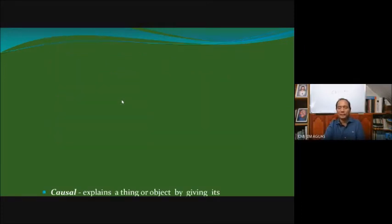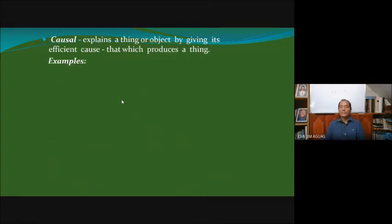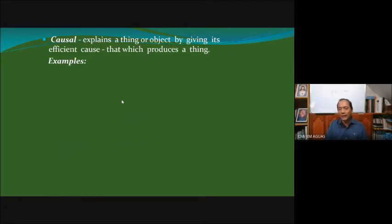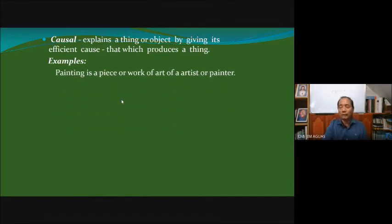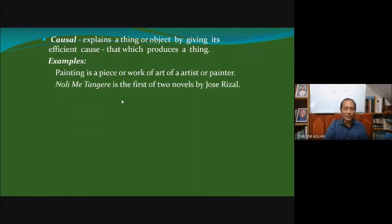The causal definition: again you give the genus, but add the efficient cause — that which produces a thing, the creator, producer, or manufacturer. For example: 'A painting is a piece or work of art of a painter or artist.' Or: 'Noli Me Tangere is the first of two novels by Rizal' — the genus is 'novel,' and by citing its author it provides the efficient cause.